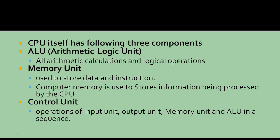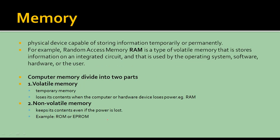The CPU itself has an ALU — arithmetic logic unit — for calculation purposes. There is a memory unit which stores data and instructions. There is a control unit which performs operations like input and output. Memory is a physical device capable of storing information temporarily or permanently. Temporary storage is RAM — random access memory. Computer memory is divided into two parts: volatile memory and non-volatile memory. Volatile memory is temporary memory.